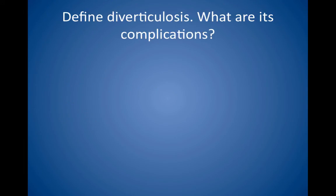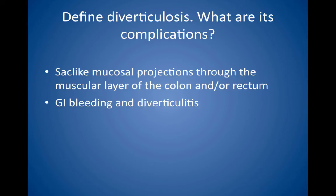Define diverticulosis. What are its complications? Diverticulosis is characterized by sac-like mucosal projections through the muscular layer of the colon and/or rectum. It is extremely common, and the incidence increases with age. It is thought to be caused in part by a low-fiber, high-fat diet. Complications include GI bleeding, a common cause of painless lower GI bleeds, and diverticulitis, which is inflammation of a diverticulum, which can lead to abscess, fistula formation, sepsis, or large bowel obstruction.